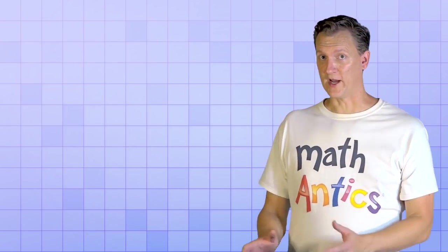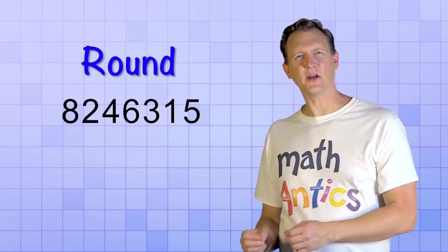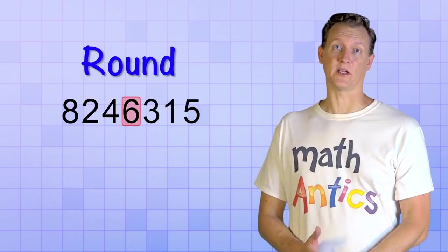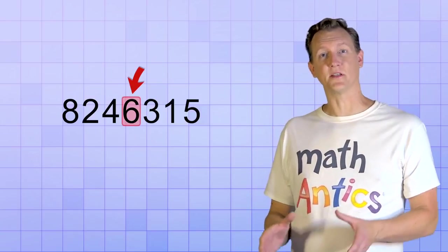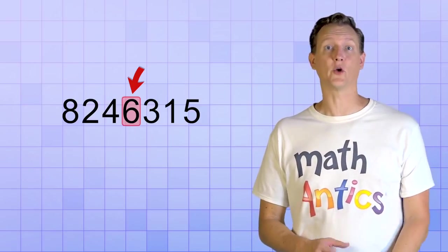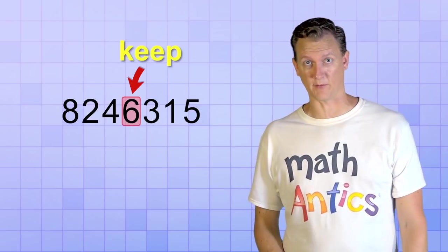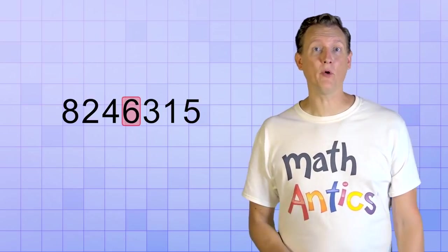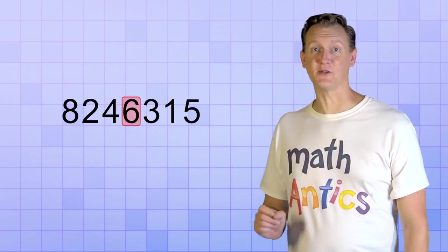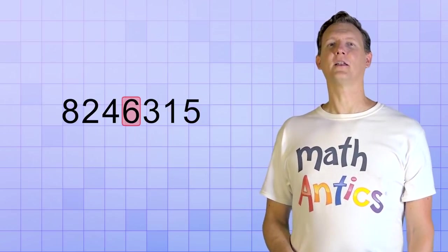Okay, so when you're asked to round a number, the first step is to pay very close attention to which number place you need to round to. That number place is important because it represents the smallest unit of counting that you're going to keep in your rounded version of the number. In fact, that number place and the digit inside it is so important that I'm going to give it a special name just for this video. Let's call it the target.